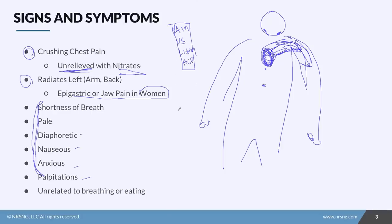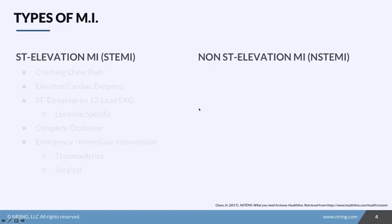That provider is likely going to order a set of cardiac enzymes and a 12-lead EKG. They'll probably also order some medications, which we will talk about in a moment.